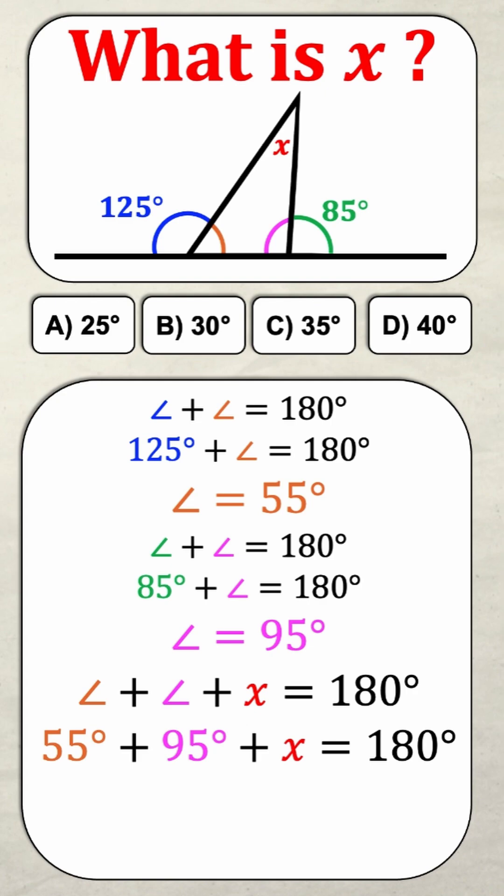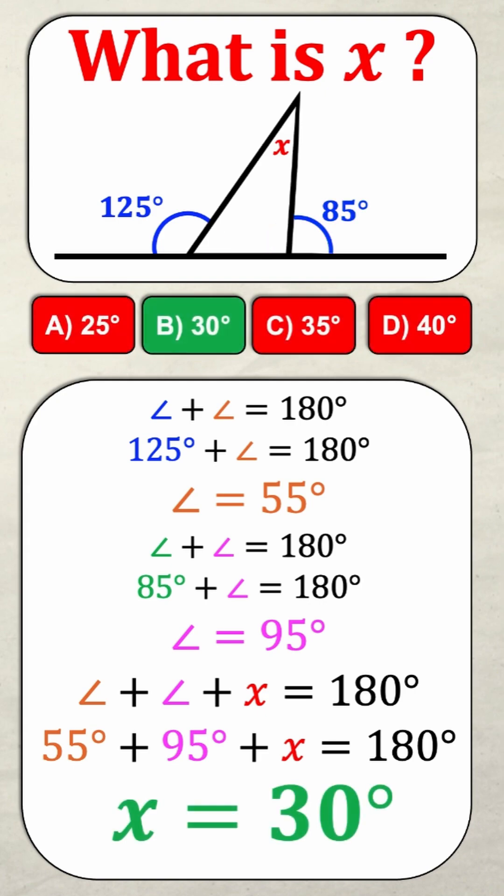55 degrees plus 95 degrees plus x equals 180. If I isolate for x, then I know that x is equal to 30 degrees.